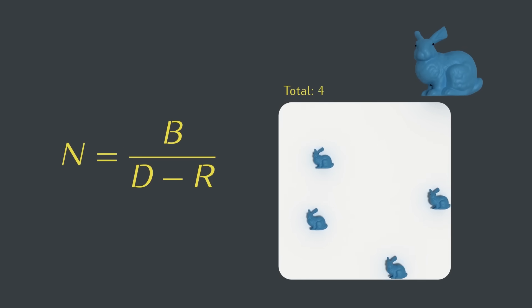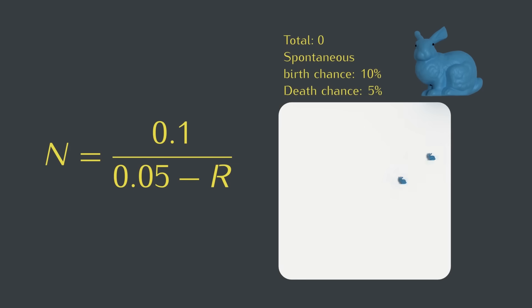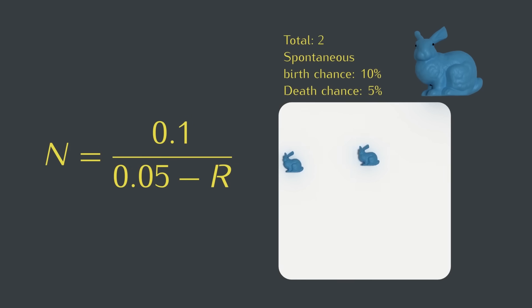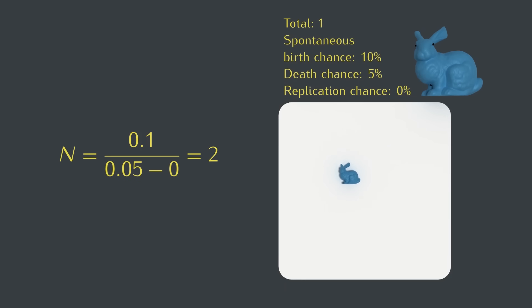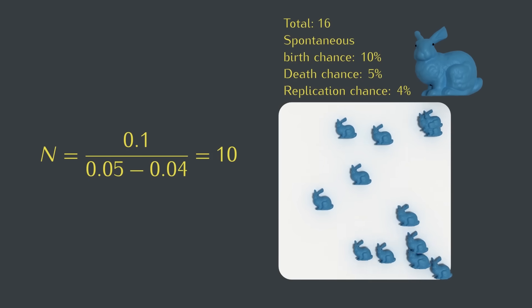We'll start our simulation with two creatures. The spontaneous birth chance each frame will be 10%. That's a lot higher than it would be for an actual rabbit, but we only have so much time in this video. And the death chance per creature each frame will be 5%. For now, we'll just leave the replication chance at 0. Our formula tells us that the equilibrium number of creatures should be 2, though it's a bit hard to see in this simulation because of the fluctuation. Anyway, if we bump the replication chance up to 1%, we see the equilibrium number go up to 2.5. Not a huge difference, but as we push it higher, the equilibrium number goes up by more and more each time, and we can start to see the effect in this simulation.